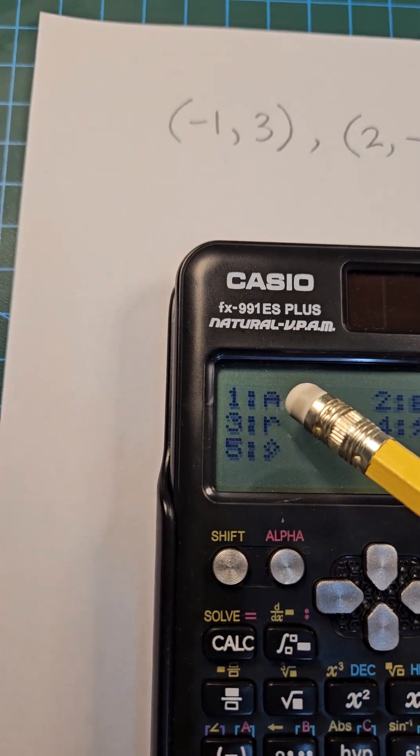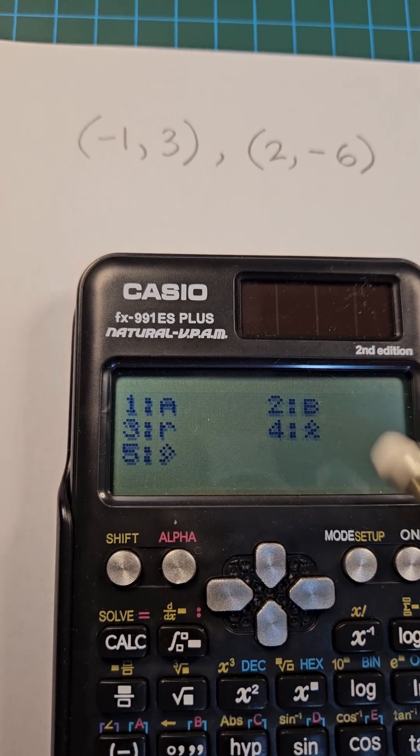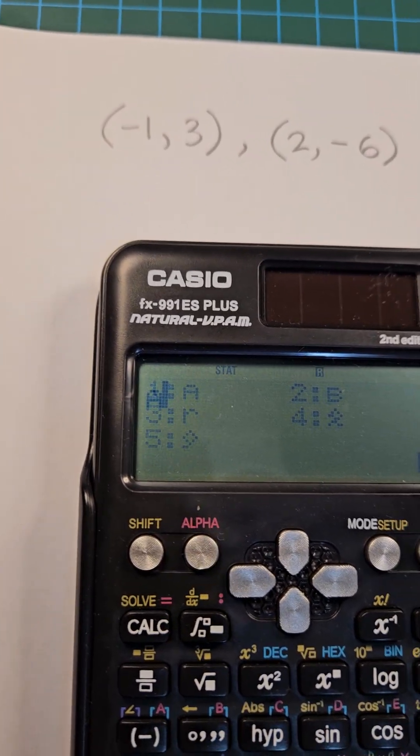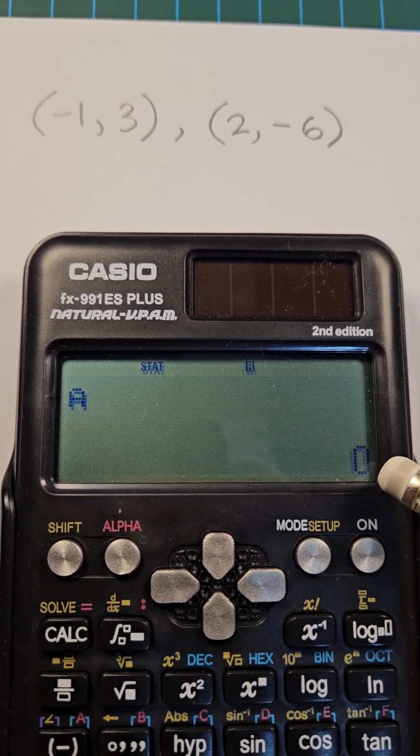We have options 1 and 2, a and b. A represents the y-intercept and b represents the gradient. If we select option 1 and press equals, we have a y-intercept of 0, so the line is going to pass through the origin.